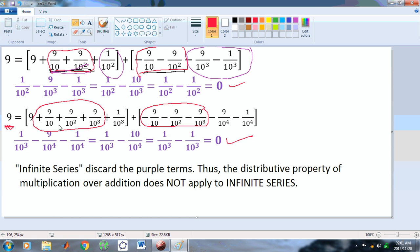So, what happens with the infinite series is that they discard the purple terms, or these terms here. These terms are the purple terms. These are discarded. Thus, the distributive property of multiplication over addition does not apply to infinite series.